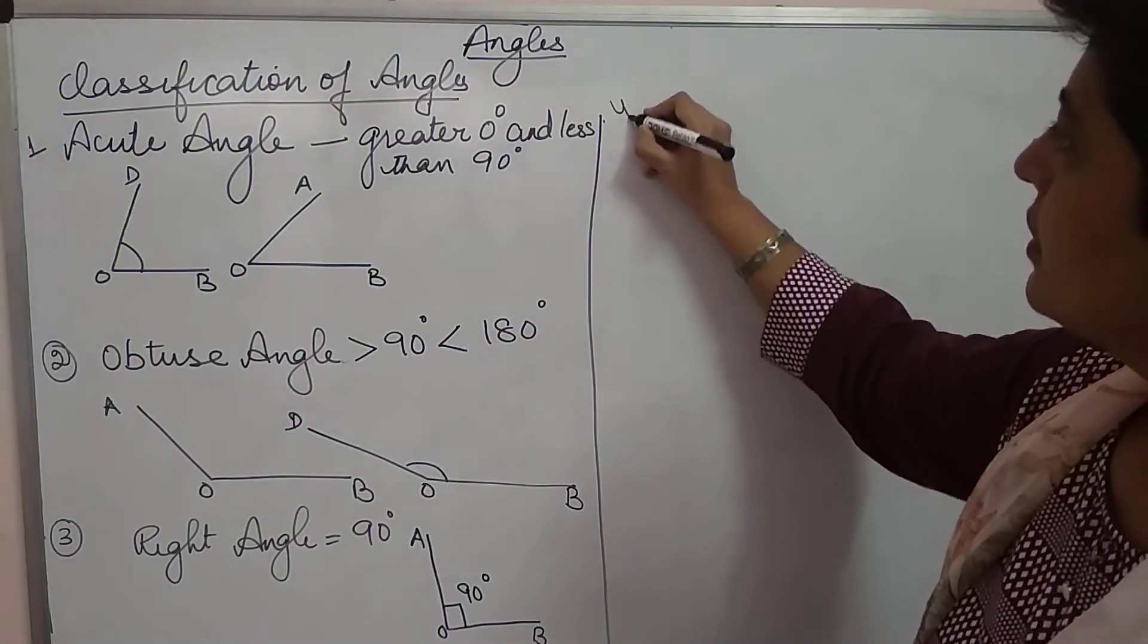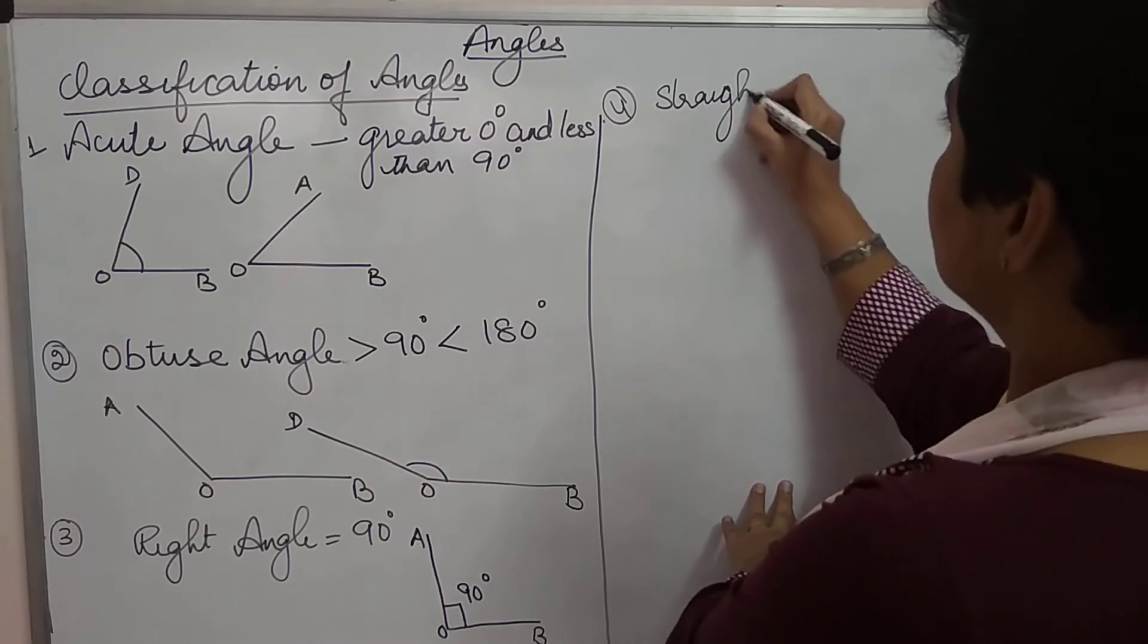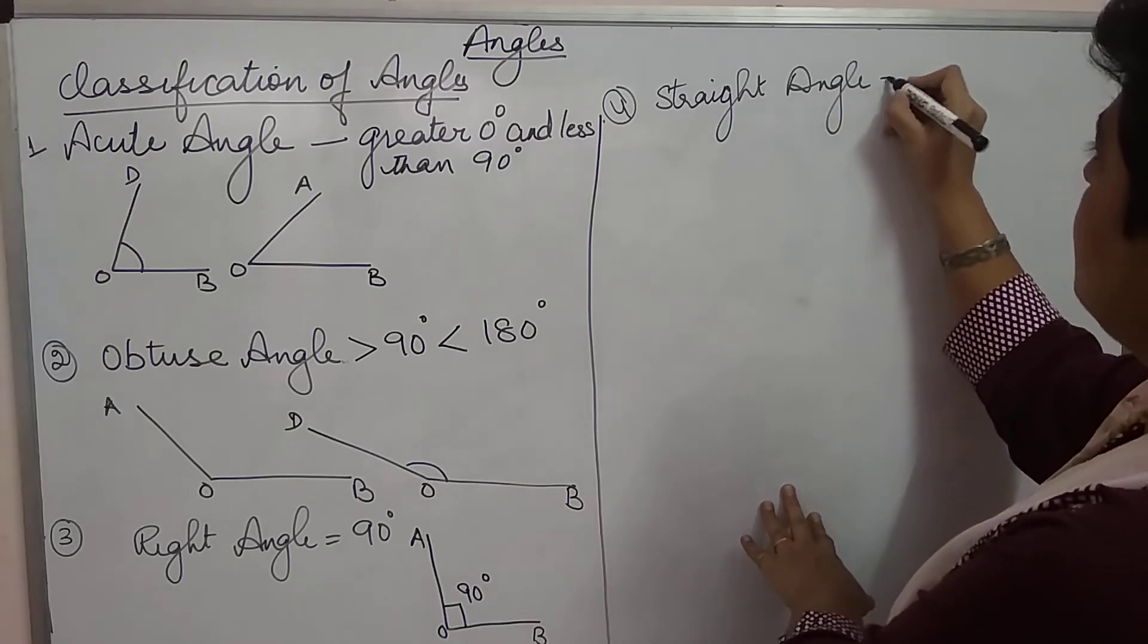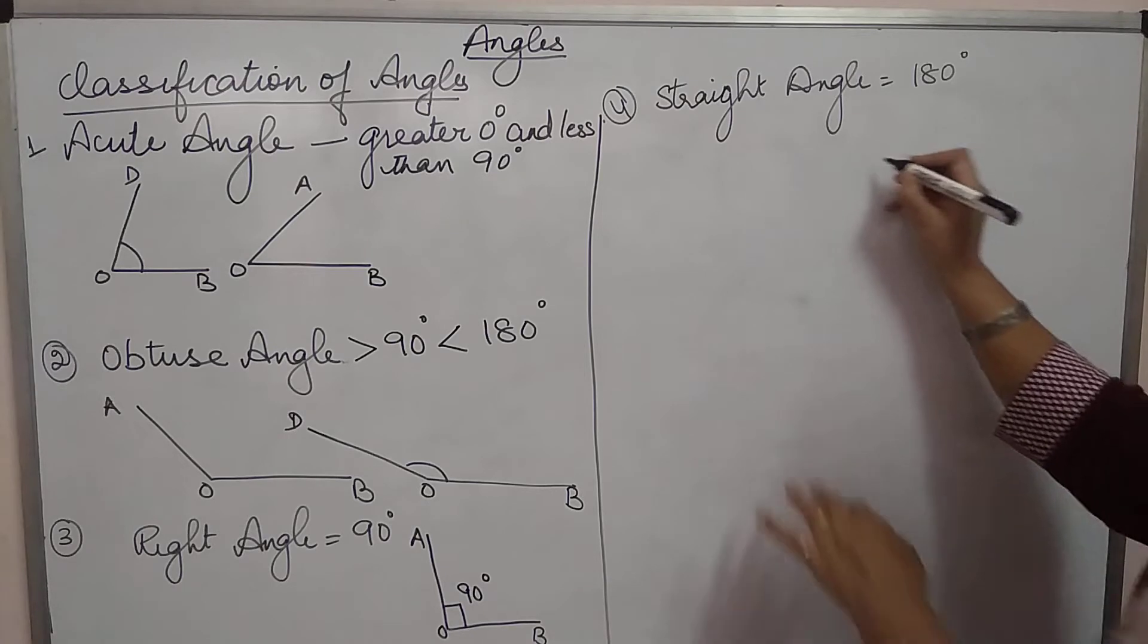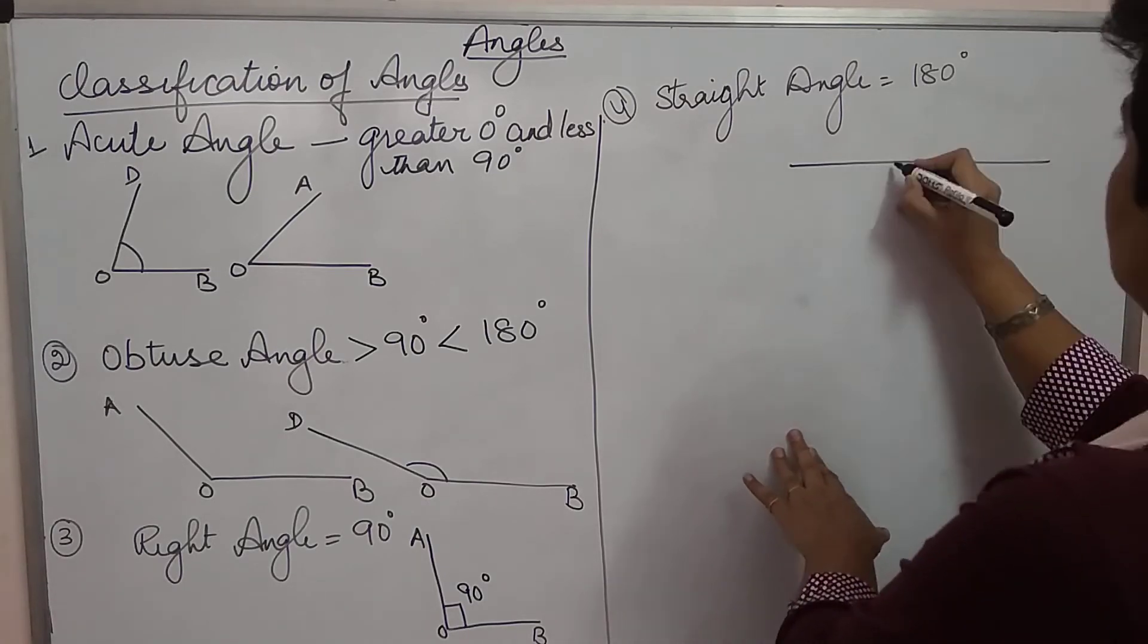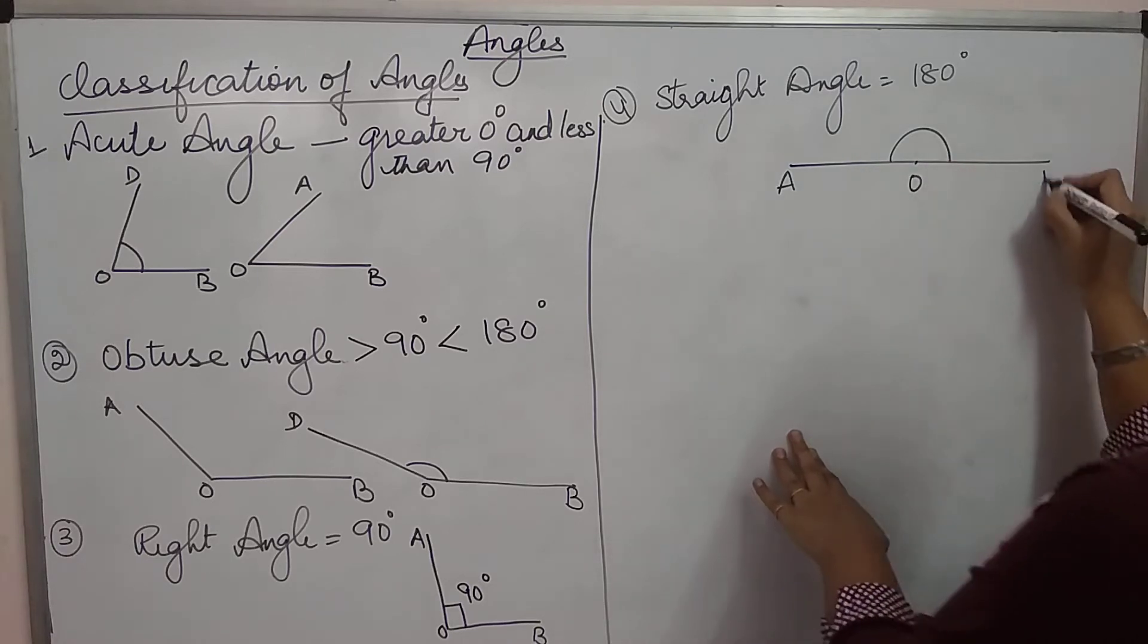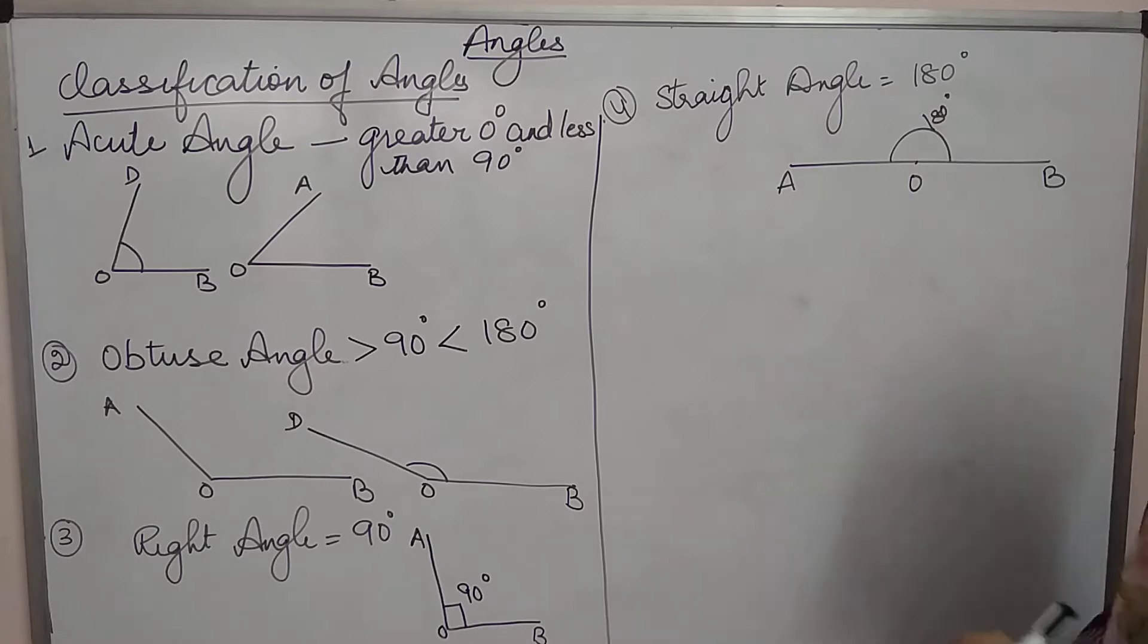Next, straight angle. Straight angle is equal to 180 degree. So, a straight line, simplest of all. You can make it without the protector also. Angle AOB is equal to 180 degree.